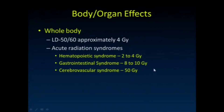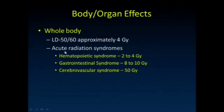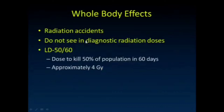Looking at body organ effects — the lethal dose that would kill 50% of the population at 60 days is approximately 4 gray in humans. This is nothing anyone would ever be exposed to as part of a radiologic procedure; these are really radiation accident levels. Acute radiation syndromes: you really suppress the bone marrow with values in the 2 to 4 gray range. Gastrointestinal syndrome occurs at 8 to 10 gray, where you slough the entire mucosa of your GI system. And the cerebrovascular syndrome unfortunately produces terrible cerebral edema and death typically within hours.